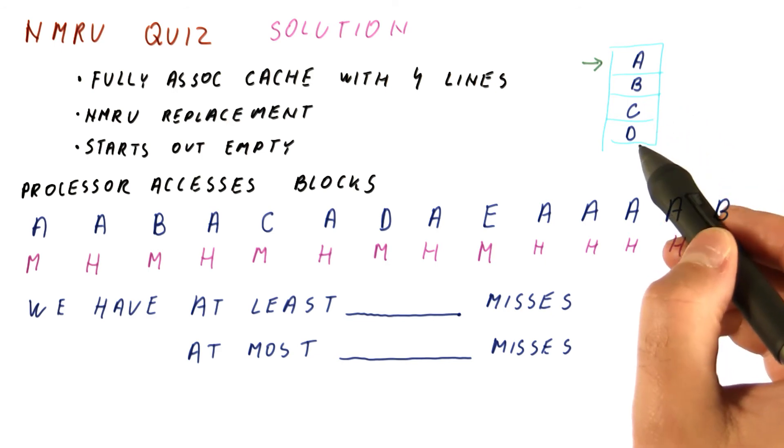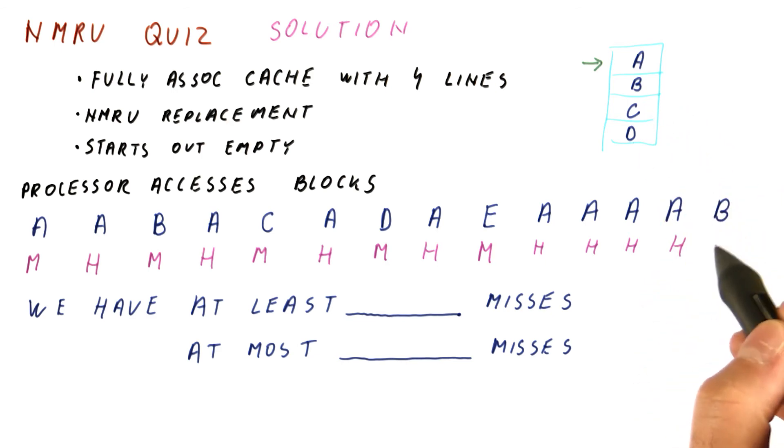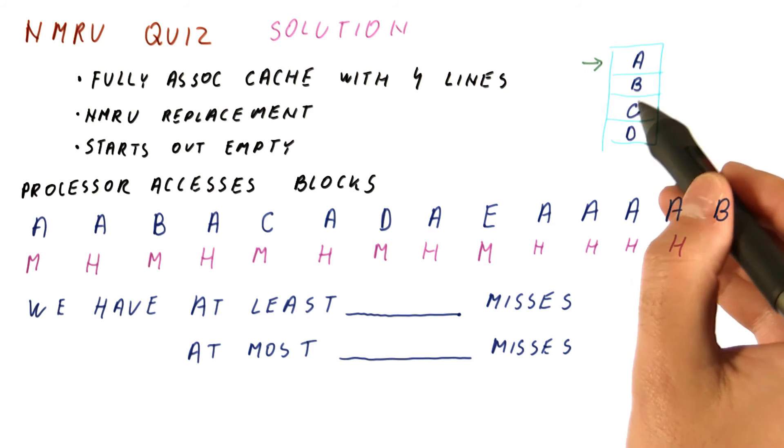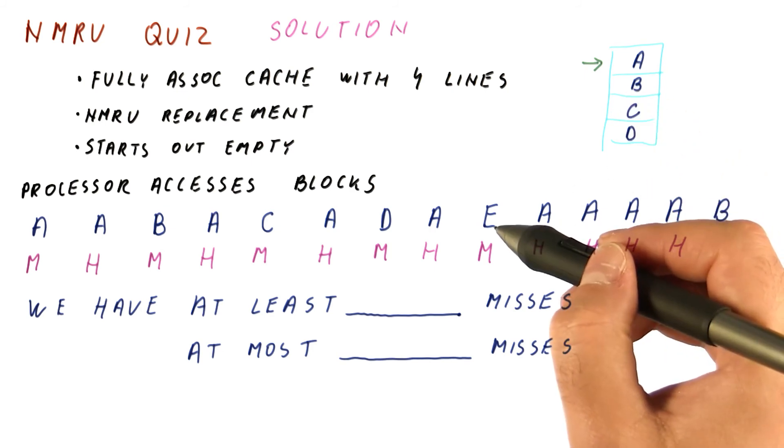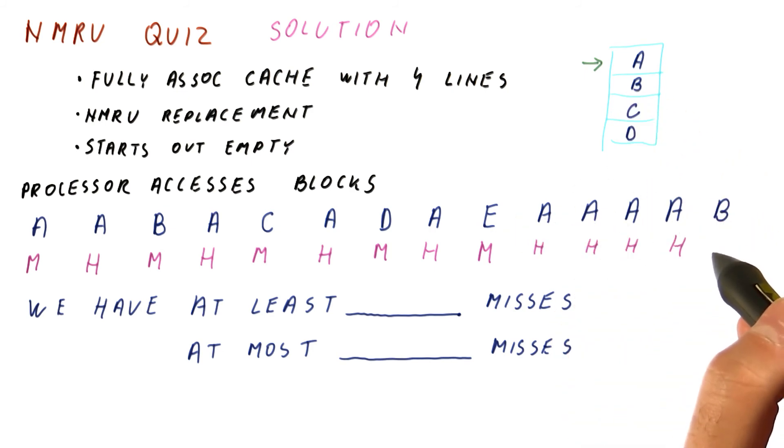So if we replace C or D, then here we will have a hit. If we however select B for replacement and put E there, then B here will have a miss. So we have a hit or a miss here.